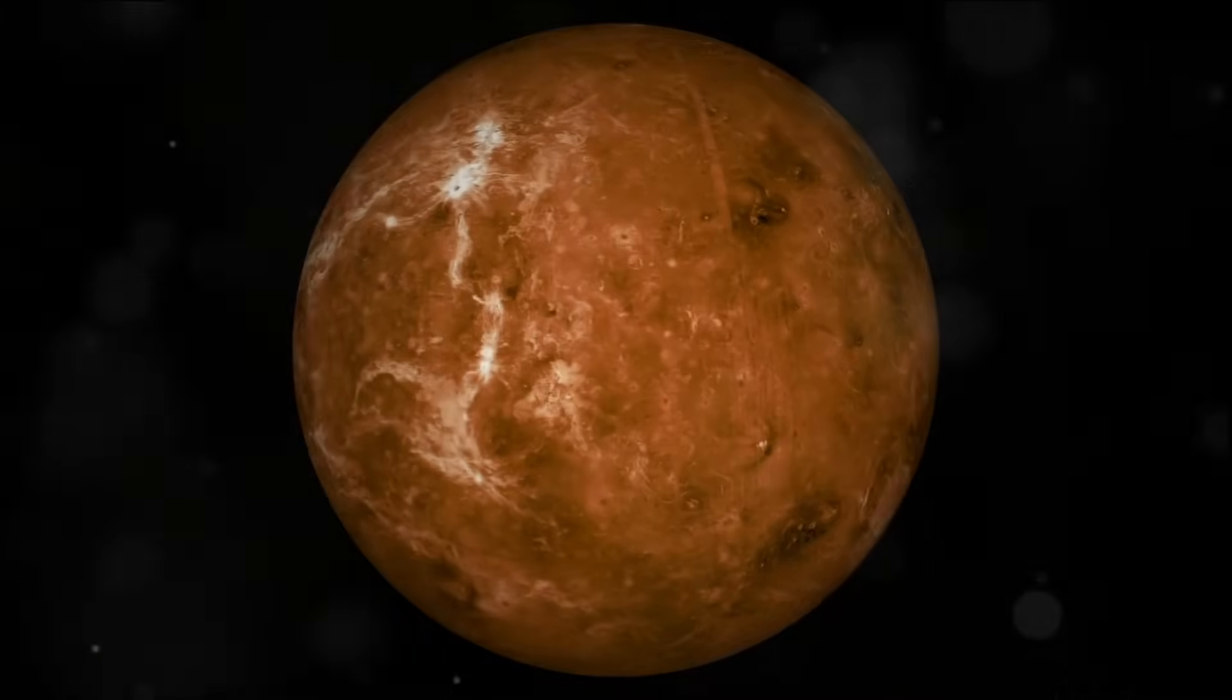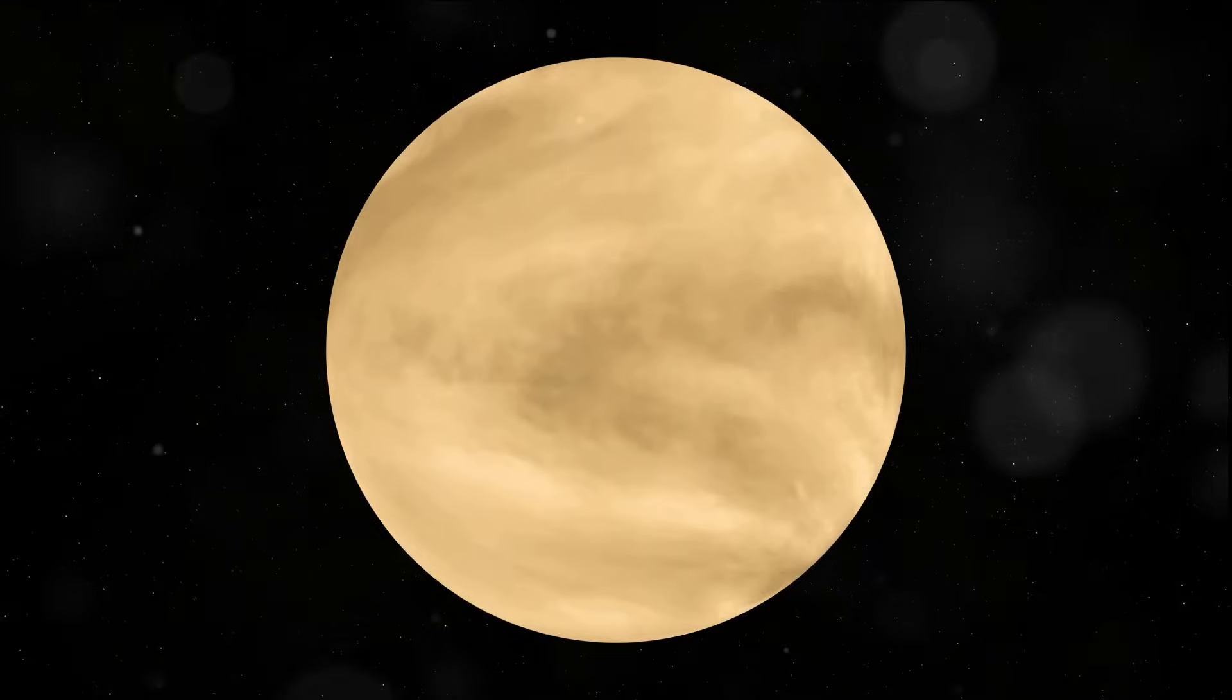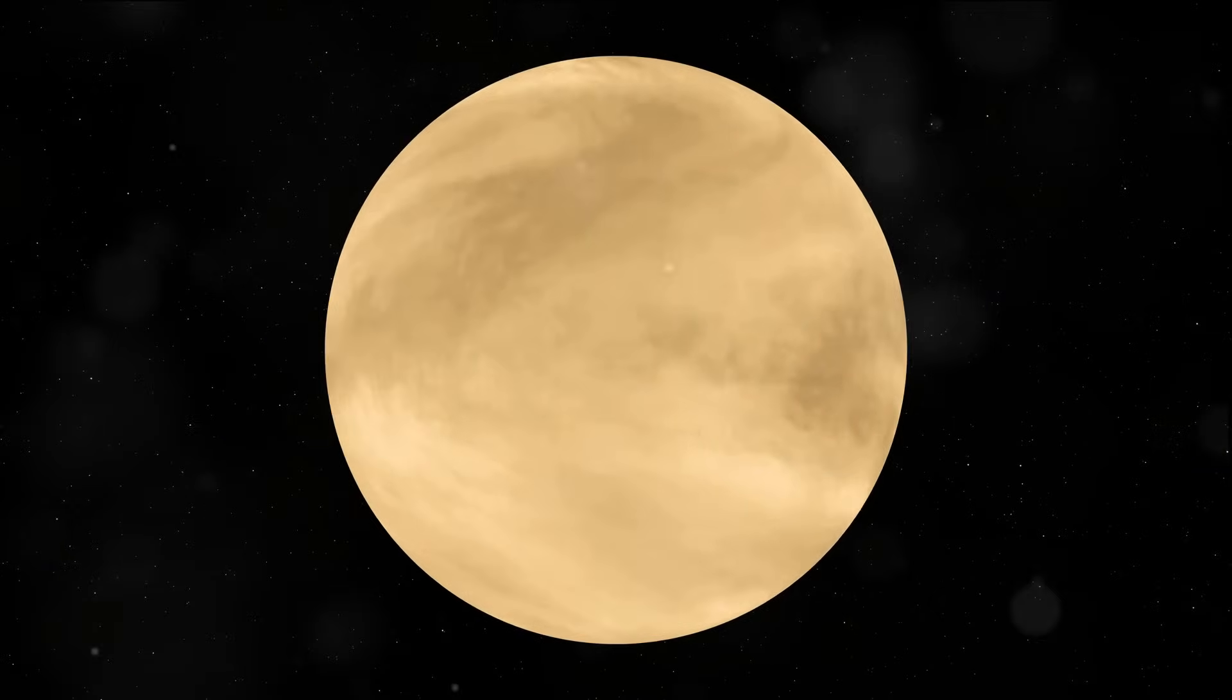Welcome to Venus, the second planet from the sun, often called Earth's evil twin. But what makes Venus so nefarious? Well, it all starts with its thick, toxic atmosphere.